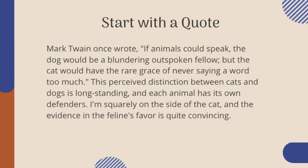Or I could start with a quote. Mark Twain once wrote: 'If animals could speak, the dog would be a blundering outspoken fellow, but the cat would have the rare grace of never saying a word too much.' This perceived distinction between cats and dogs is longstanding and each animal has its own defenders. I'm squarely on the side of the cat, and the evidence in the feline's favor is quite convincing. By starting with Twain's quote, I'm showing there's a famous debate going on, then positioning myself on one side of it to lead into my overall argument.